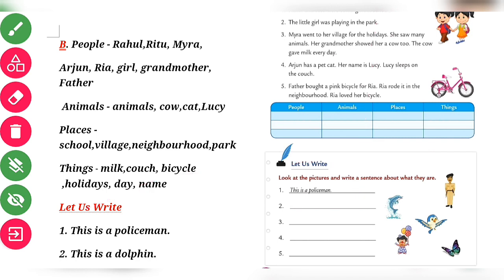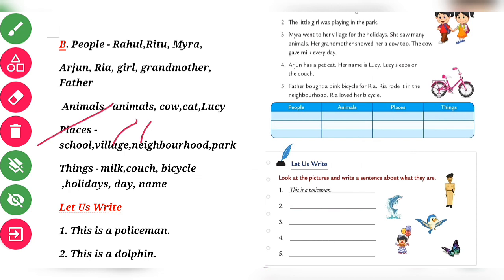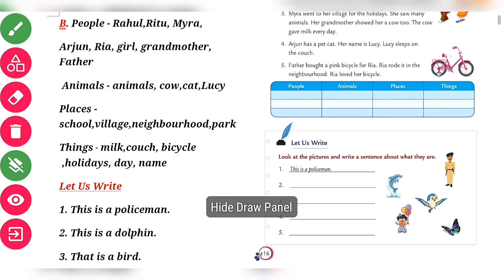Sentence three: Myra visited her grandmother's village — write village in place, grandmother in people, cow in animals, and milk in things. The places column includes: school, village, neighborhood, park. Things column includes: milk, couch, bicycle, holiday, day. That completes that exercise.